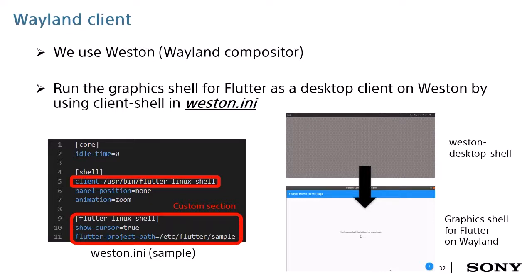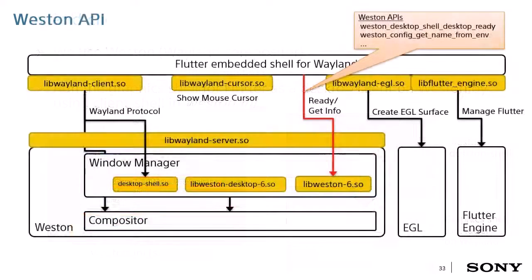Currently, we've been using Weston as a Wayland compositor. Here is the default Weston desktop shell. To replace it with our graphics shell, we use the Weston configuration file. Using the client field in the shell section like this, you can freely use it as your own desktop shell. In addition, you can use and create custom shells like this. You need to return a ready flag when a Wayland client is ready to show using the Weston API, and you can also get information from Weston.